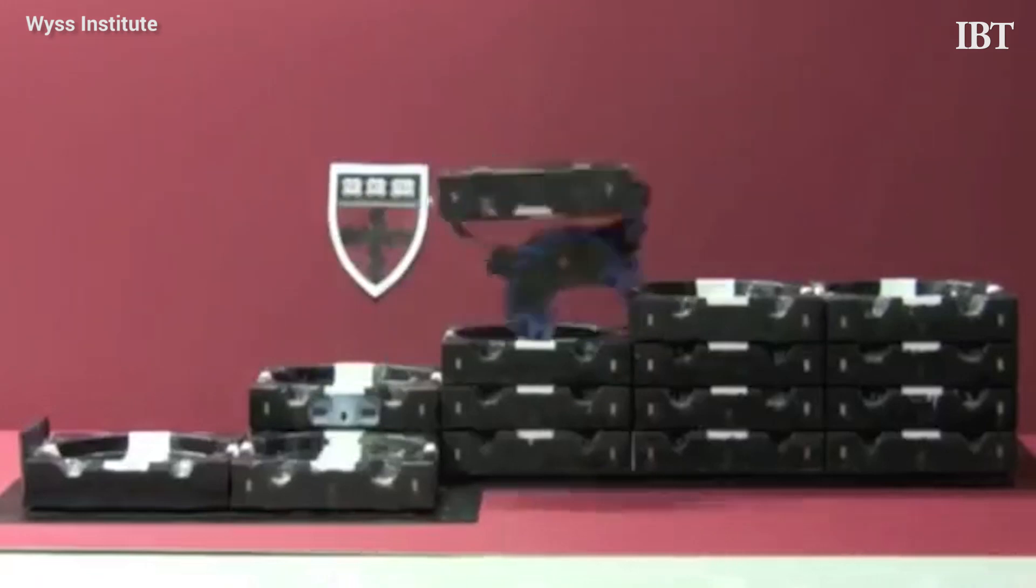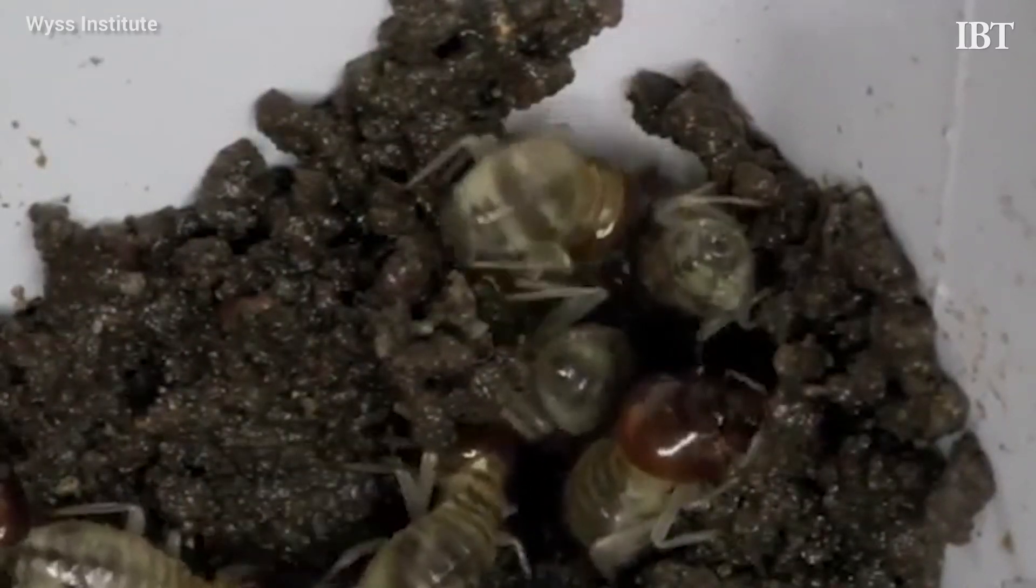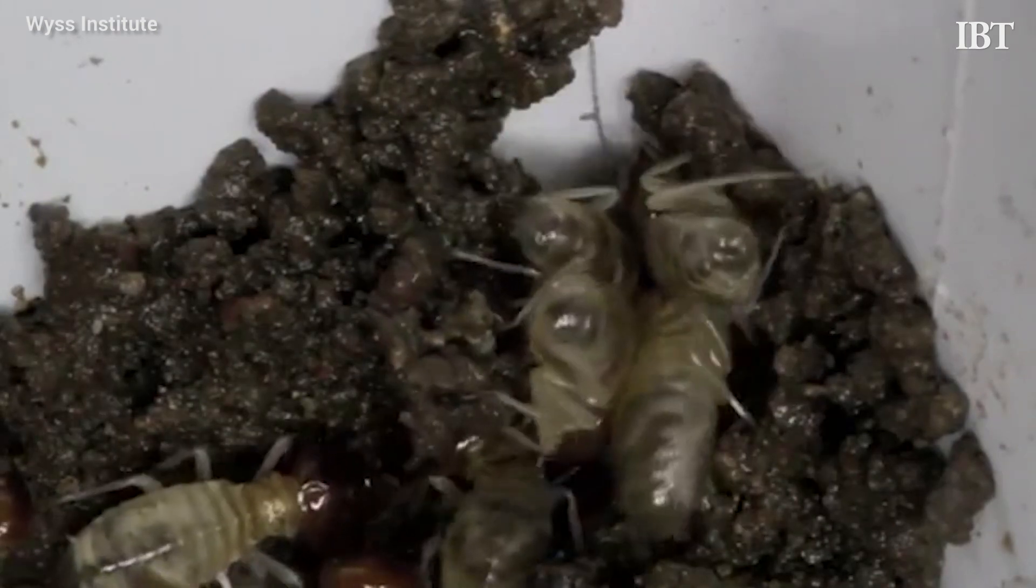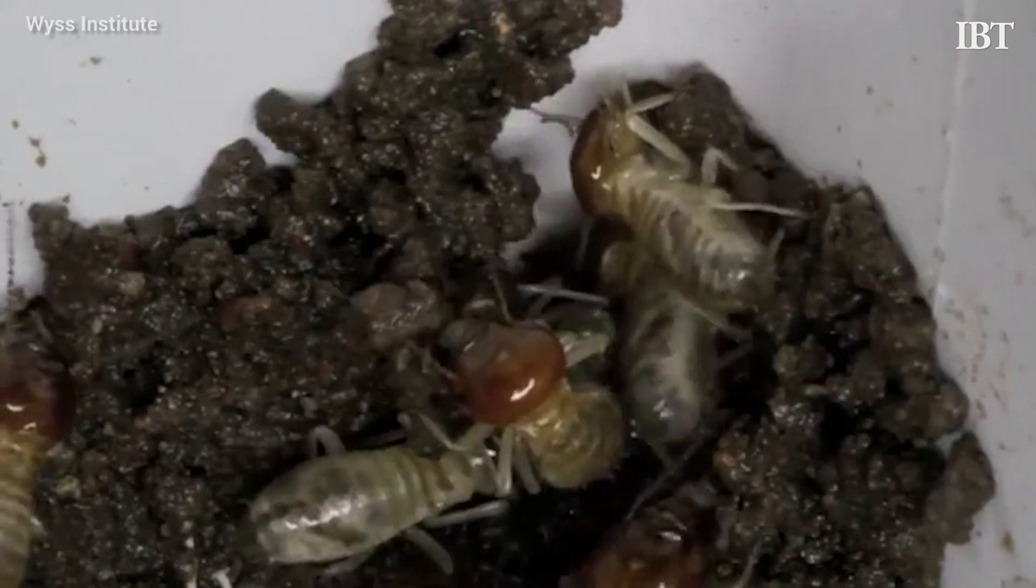But why would these mini robots act like termites? Termites as insects are extremely intelligent. They take cues from one another, work as a team, and can build complicated mounds of soil complete with tunnels and chambers.